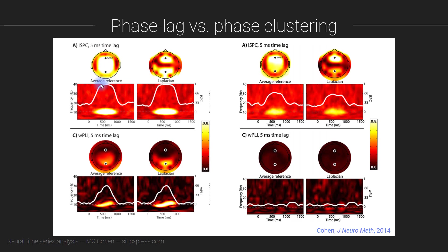Electrode Pz is shown here. These maps show time-frequency analysis of synchronization between Fz and Pz, evolving over time and frequency. I repeated all analyses using both phase clustering and phase lag index. The solid white line shows ISPC synchronization between Fz and Pz at 10 Hz, and the dotted line corresponds to zero on that scale.